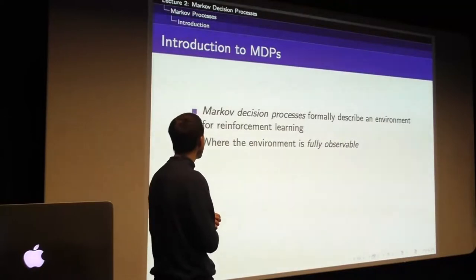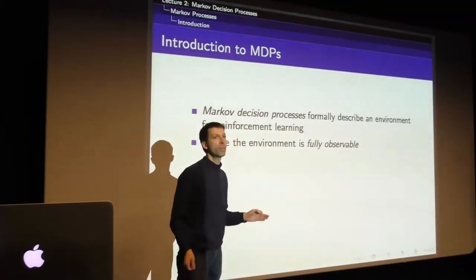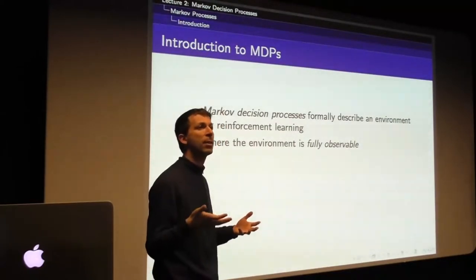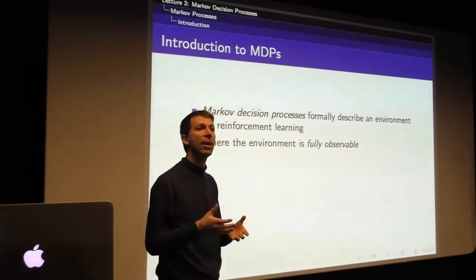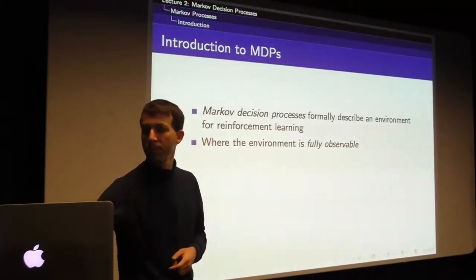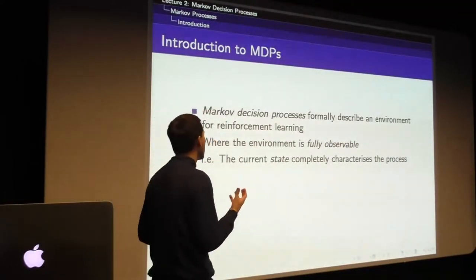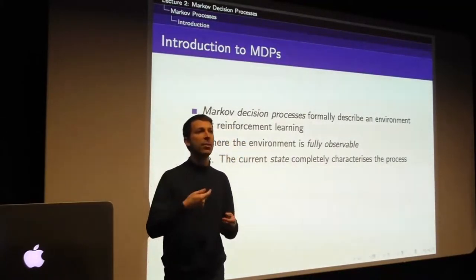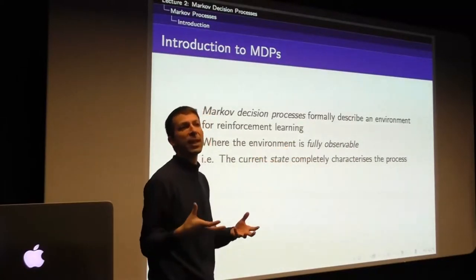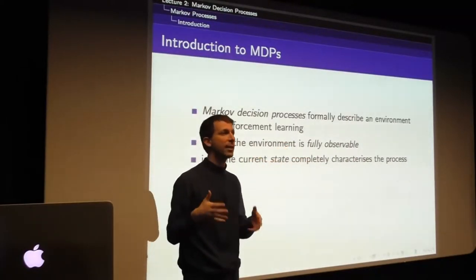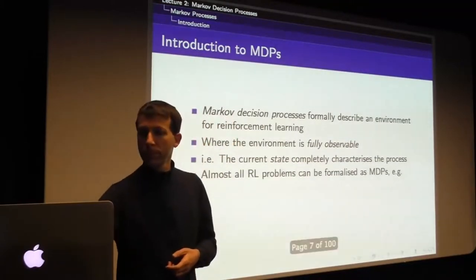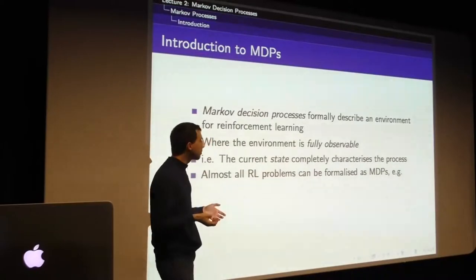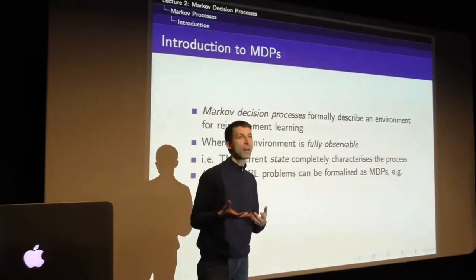We'll start with the nice case where the environment is fully observable - we're told the state. This is where we see everything there is to know about the environment; all relevant information is presented to our agent, nothing is hidden. The current state given to the agent completely characterizes the process - the way the environment unfolds depends on a state, and we know that state. It's fully observed.